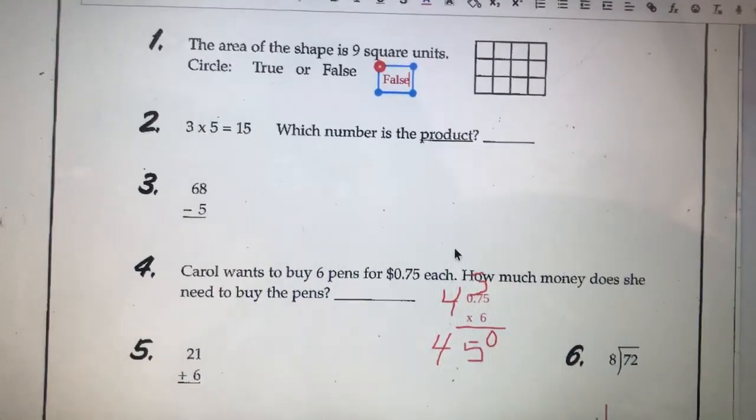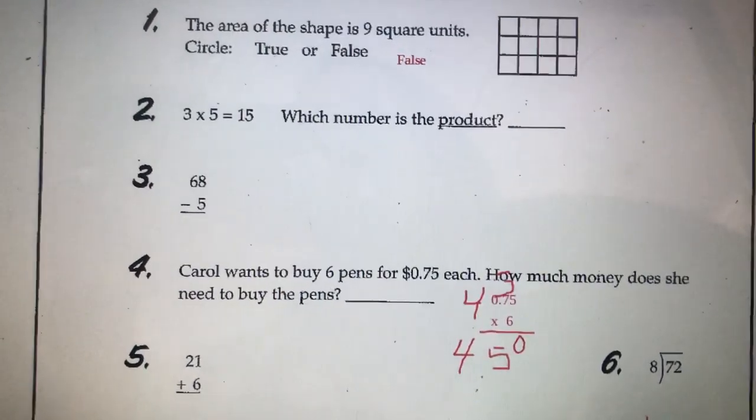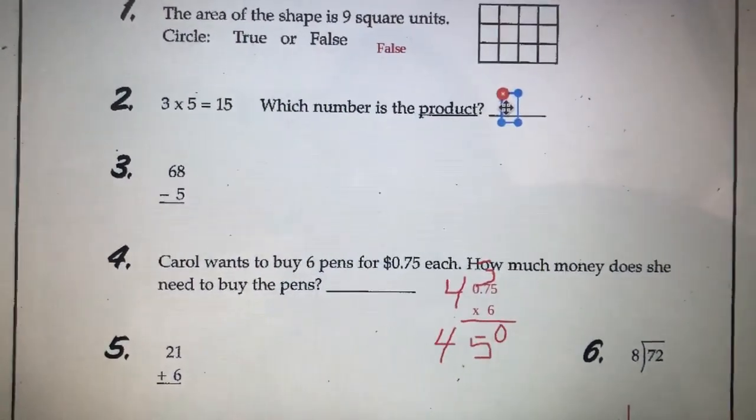Number 2, 3 times 5 is 15. Which number is the product? The product is basically the answer when you're multiplying, so our product here would be 15.